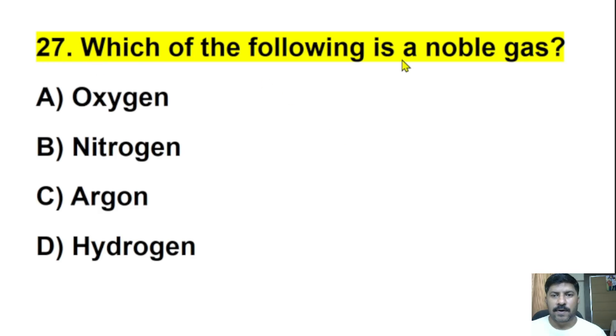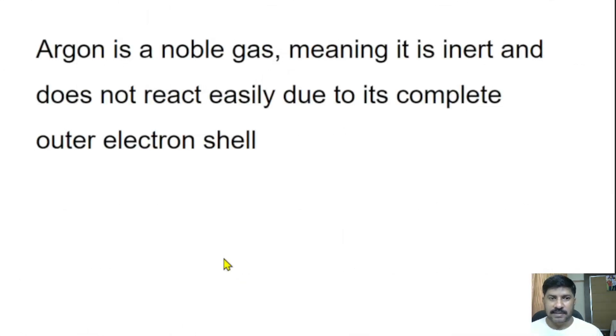Twenty-seventh question: Which of the following is a noble gas? Oxygen, nitrogen, argon, or hydrogen? The correct answer is argon. Argon is a noble gas. It is also known as inert gas because it does not react easily due to its complete outer electron shells. If there is an extra electron, there is a chance of reactions. But its outer shell is complete, so it will not easily react with other chemicals.